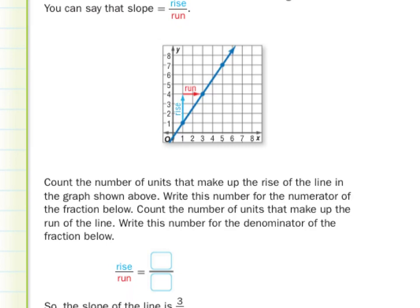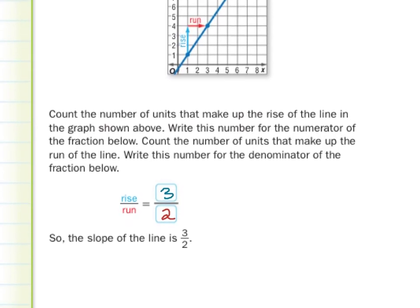Count the number of units that make up the rise of the line in the graph shown above. Write this number for the numerator of the fraction below. All right. Well, if we start here, and we're to count up, right now we haven't moved. We're going to go up 1, 2, 3. So our rise is simply 3. Now from this point, our run, starting here we're at 0, we haven't moved, at least horizontally yet. Our run is going to be 1, 2. So our run is equal to 2. So the slope of the line is 3 halves.